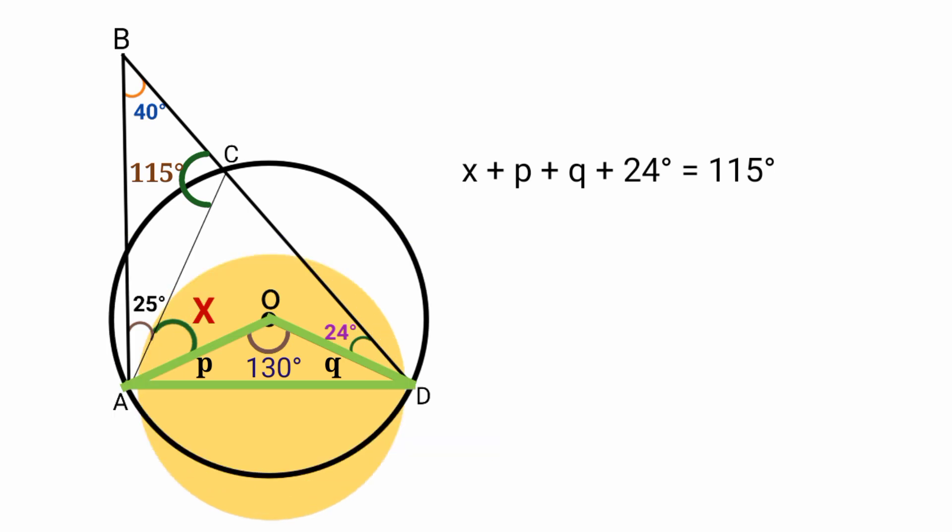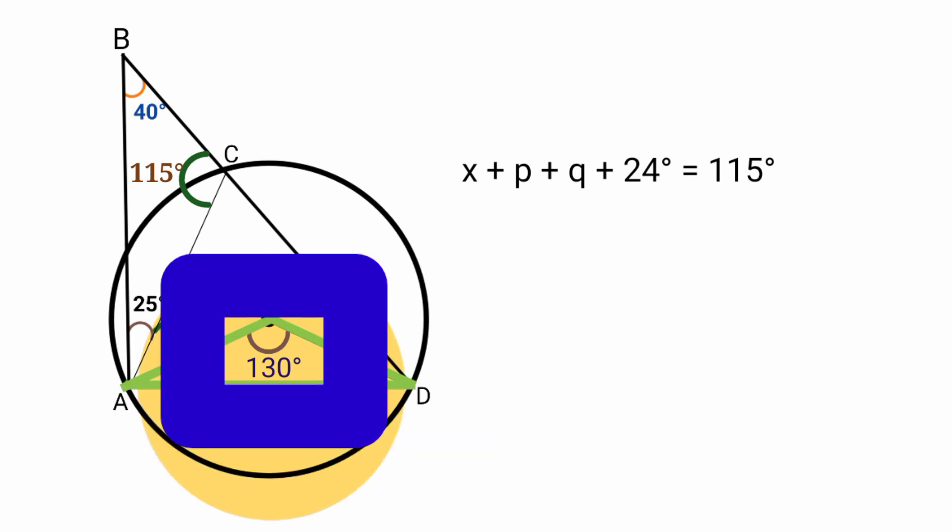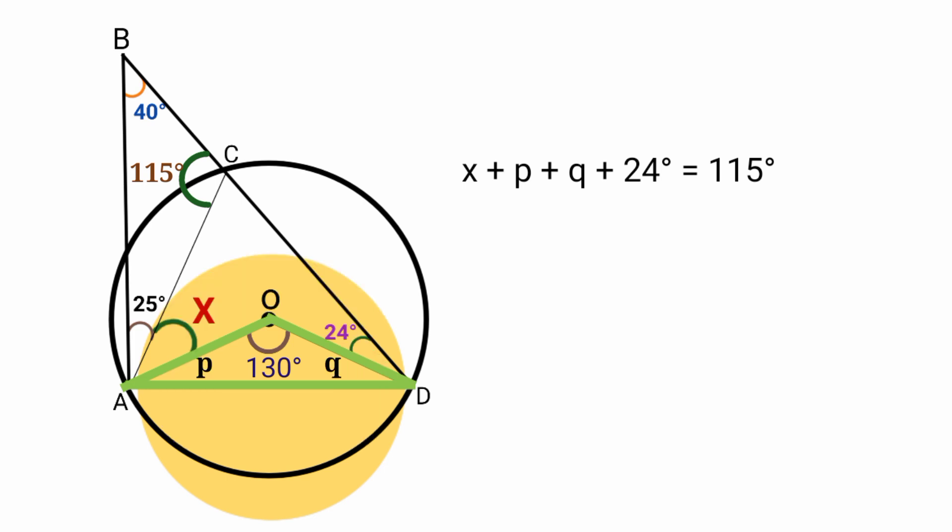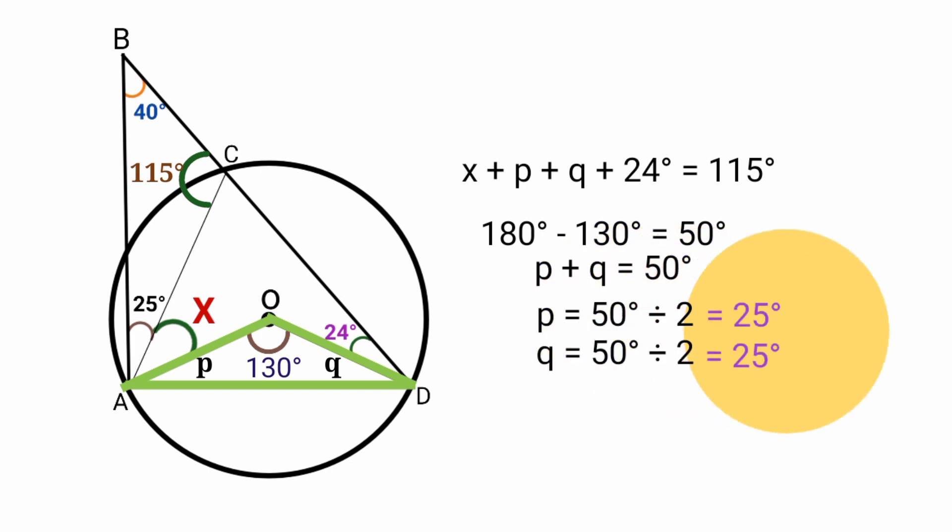Now we've got this angle here to be 130. Coming back to this triangle as a whole, since this angle is 130, to find the values of P and Q we subtract 130 from 180. Now 180 degree minus 130 is 50 degree. So therefore, P plus Q is equal to 50 degree. But recall P is equal to Q. So therefore, P is equal to 50 degree over 2 and Q is equal to 50 degree divided by 2. This is 25 degree and this is also 25 degree.